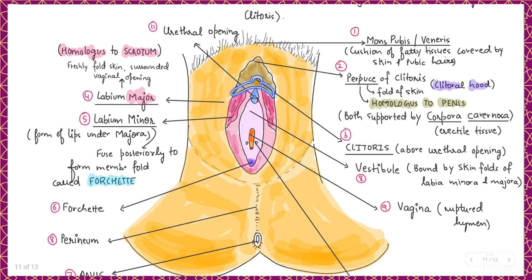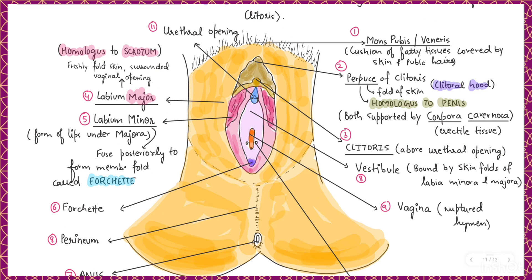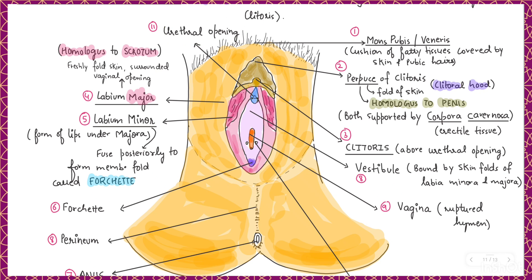The third structure is a small pea-shaped, finger-like structure called the clitoris. The clitoris is present above the urethral opening — this is the urethra from where a woman passes urine. Below the clitoris we can see the urethral opening.